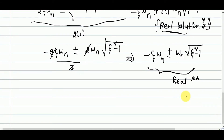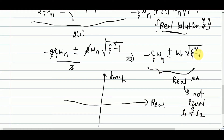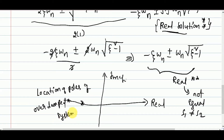If you draw the real axis and imaginary axis, both poles lie on the real axis. Also note that s1 is not equal to s2, because minus zeta*omega_n minus omega_n*root(zeta-squared minus 1) is not equal to minus zeta*omega_n plus omega_n*root(zeta-squared minus 1). So the poles lie on the real axis but not at the same point — this is the location of poles for an over-damped system.